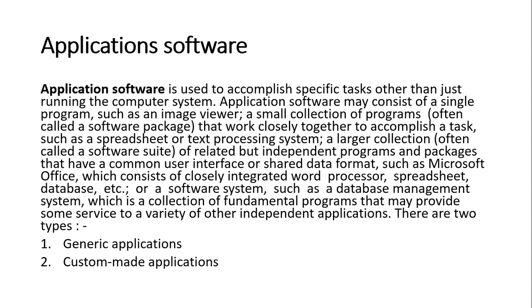Application software is software used to accomplish specific tasks rather than the running of a computer system. Application software can consist of a single program like an image viewer, or a collection of programs called software suites or software packages. Application software is divided into two types: generic applications and custom-made applications.